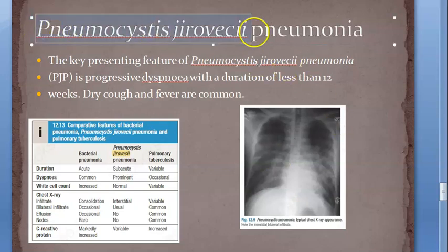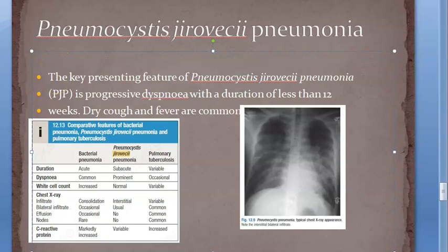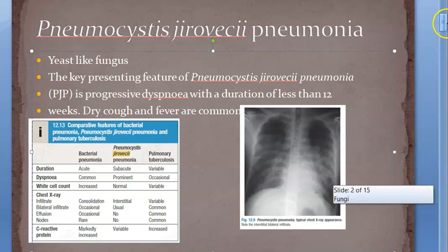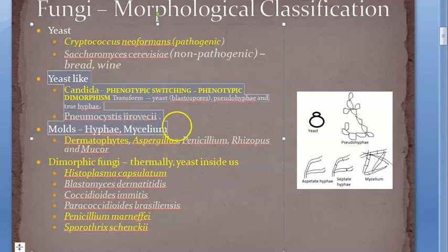In this video we want to look at Pneumocystis jirovecii. It is a yeast-like fungus. You should understand: is it a fungus, is it a yeast, or like a proper yeast? No - yeast-like means something in between. In fungus you have yeast, yeast-like, molds, and dimorphic. In yeast-like, you have Candida and Pneumocystis jirovecii.